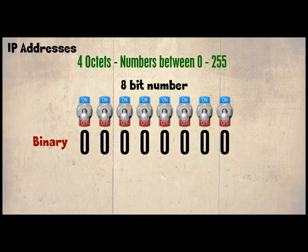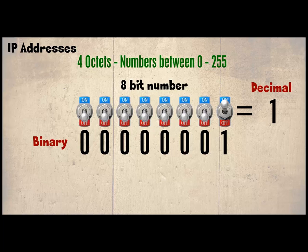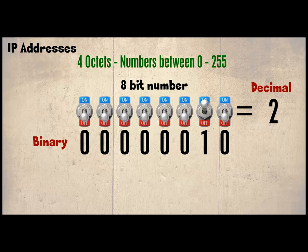To the right we will use the decimal equivalent. If we leave all the switches in the off position, this represents binary 00000000, which is also decimal 0. If we switch on the far right switch, the binary number is 00000001, which is decimal 1. The next number, decimal 2, would be 00000010. If we then turn on the last two switches giving 00000011, this would be 3.